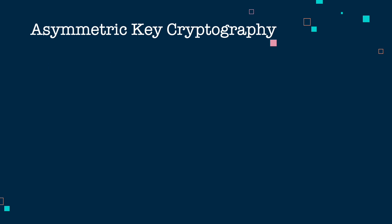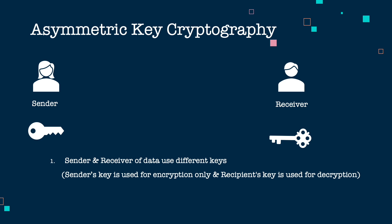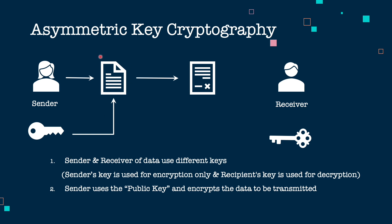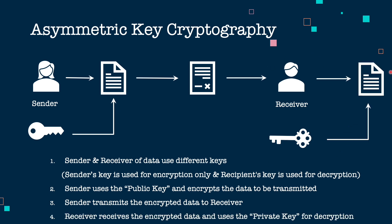In asymmetric key cryptography, the sender and the receiver use two different keys. The sender has a public key which can only encrypt data — it cannot decrypt. The receiver has a private key which can be used to decrypt the data. The sender uses the public key to encrypt the original data, creates a ciphertext, and transmits it to the receiver. The receiver uses the private key to restore the original content from the ciphertext.